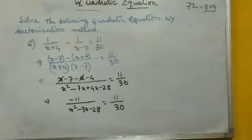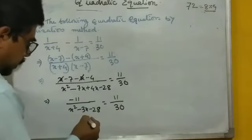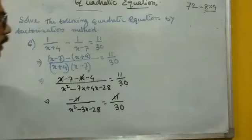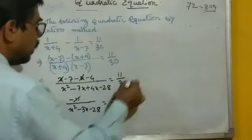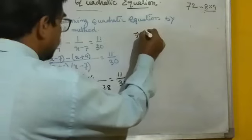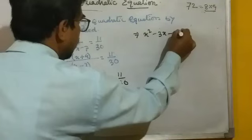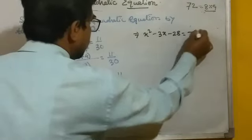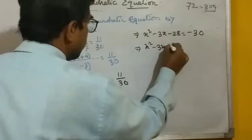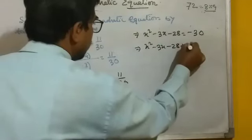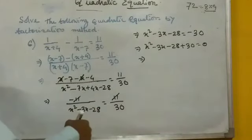Both sides have 11 as a factor in the numerator, so we can cancel the 11. After cross multiplication this gives x squared minus 3x minus 28 equal to minus 30. Rearranging: x squared minus 3x minus 28 plus 30 equal to 0.